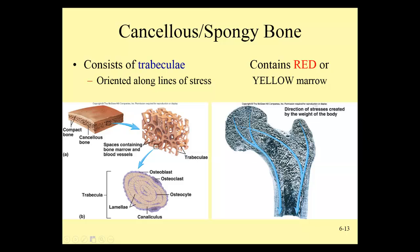Trabeculae align themselves along lines of stress. For example, in a walker or runner, osteoblasts are stimulated along stress lines to build trabeculae, so the trabeculae line up along those stress lines. The trabeculae themselves are layers of solid bone laid down in circular layers called lamellae.